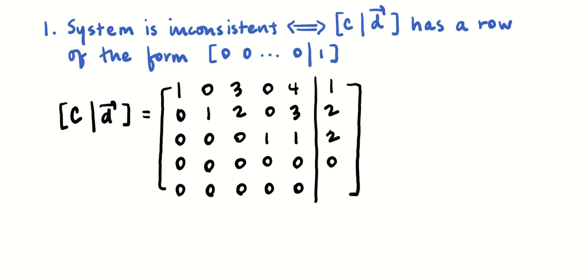My first comment is that a system is going to be inconsistent if and only if its fully reduced augmented matrix has a row of the form: all zeros and then one. If it was like that, we would see we've got a no-solution situation. In fully reduced form, it wouldn't technically be in reduced echelon form, because for reduced echelon form, each leading one is the only non-zero entry in its column.